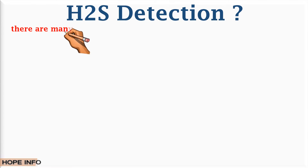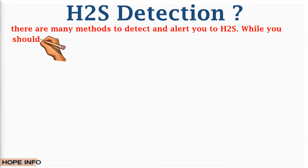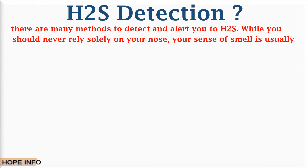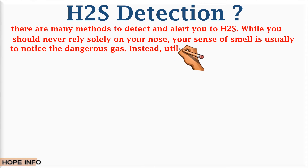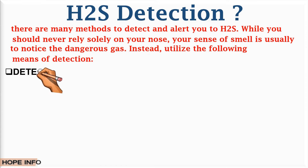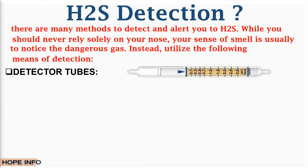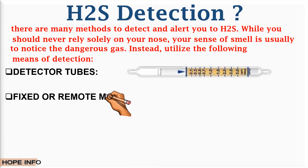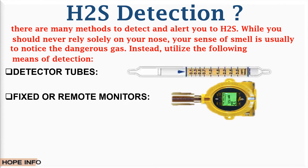H2S detection — there are many methods to detect and alert you to H2S. While you should never rely solely on your sense of smell, it is usually the first to notice the dangerous gas. Detection method number one is detector tubes: special tubes about the size of a pen that provide a measurement of H2S concentrations by changing color depending on the H2S level. Detection method number two is fixed or remote monitors: used in large sites for continuous monitoring, they trigger an alarm if H2S levels increase above safe limits, commonly set to alarm at 10 ppm.